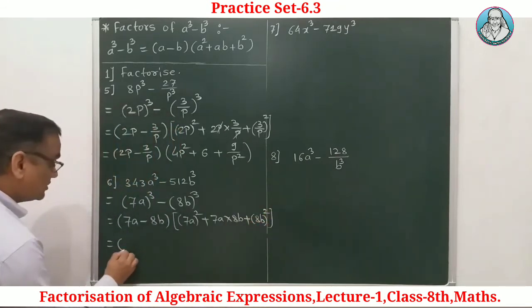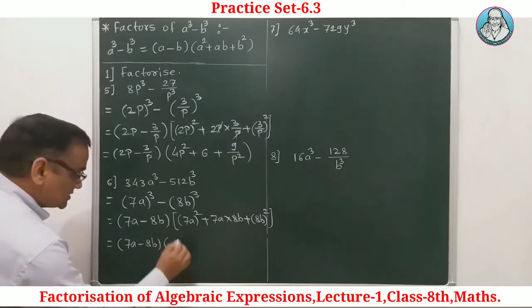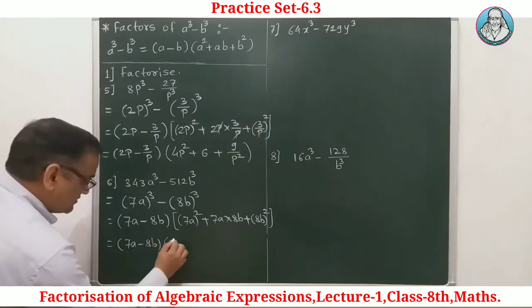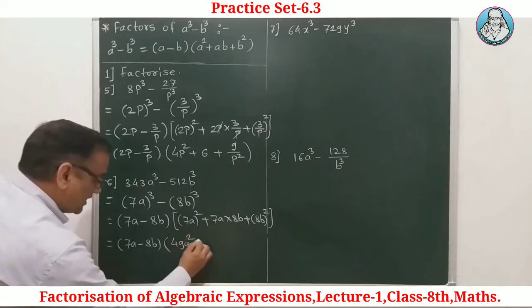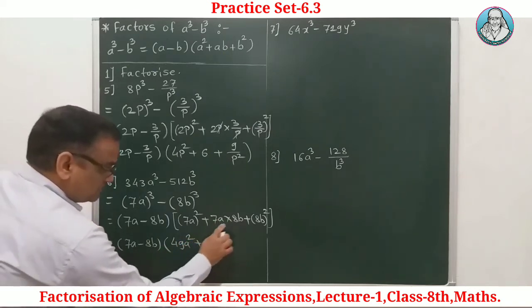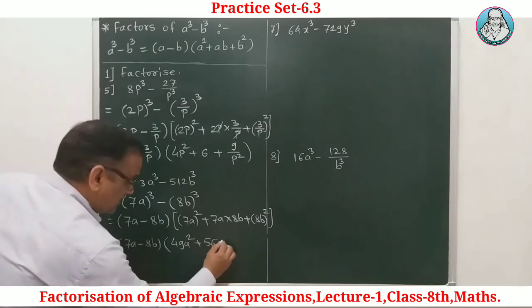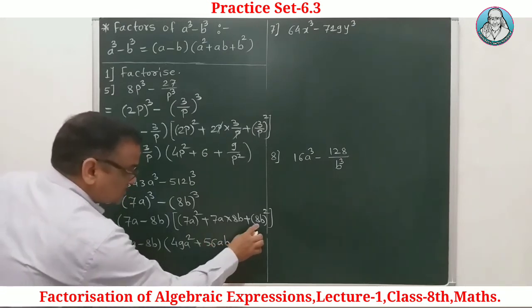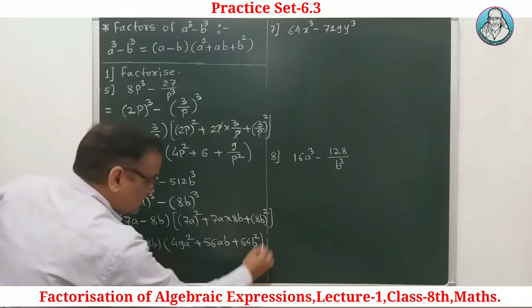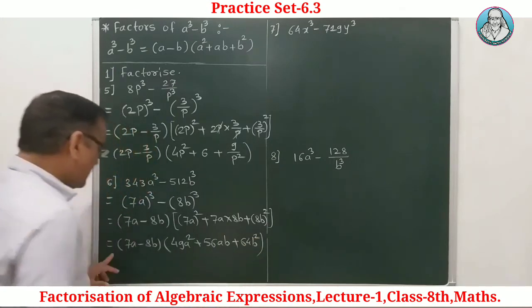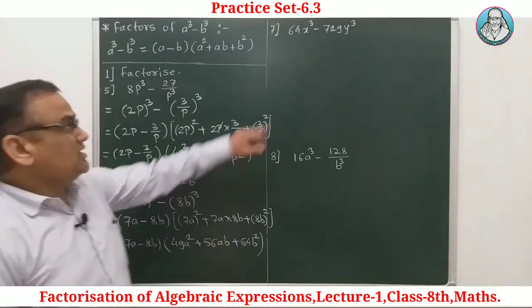Number six: Factorize 343a cube minus 512b cube. Here 343 is 7 cube and 512 is 8 cube. So first term is 7a and second term is 8b. Therefore the answer is (7a minus 8b)(49a square plus 56ab plus 64b square).